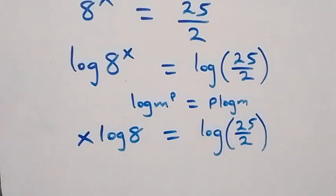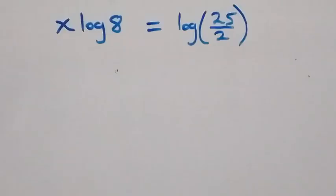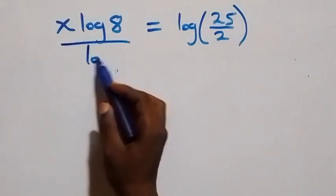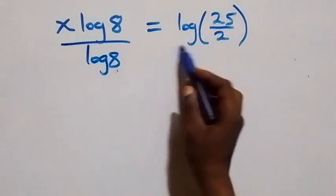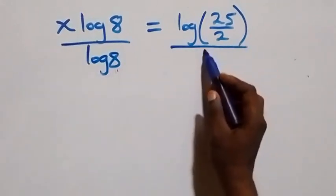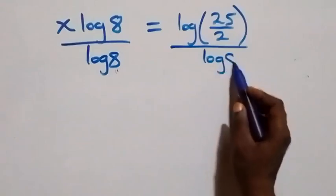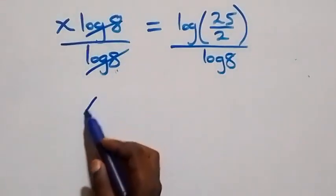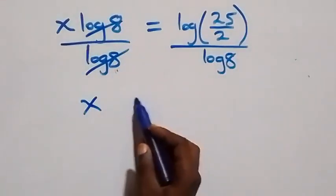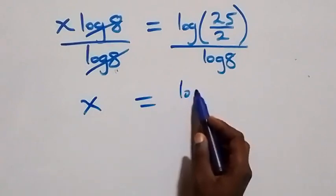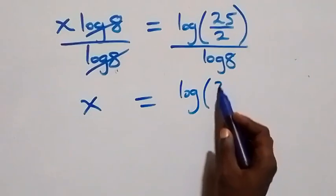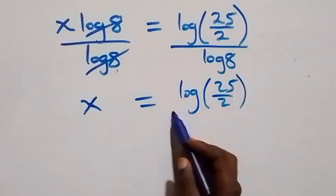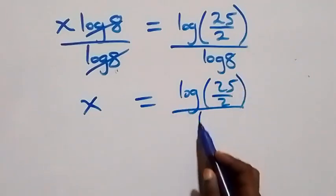The next step: we divide both sides by log 8 — divide here by log 8 and also divide this side by log 8. Log 8 cancels each other on the left side and we have x left, which is equal to log(25/2) over log 8.